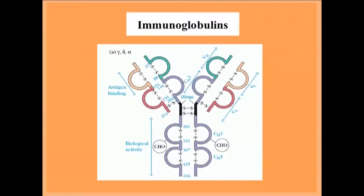An immunoglobulin molecule is composed of two heavy chains and two light chains. Each light chain has a molecular weight of 25 kilodaltons, whereas each heavy chain has a molecular weight of 50 kilodaltons, giving the immunoglobulin molecule a total molecular weight of 150 kilodaltons. From the N-terminal end for both chains, a sequence of 110 amino acid residues varies among different immunoglobulins. This region is called the variable region and is responsible for binding to an antigen.